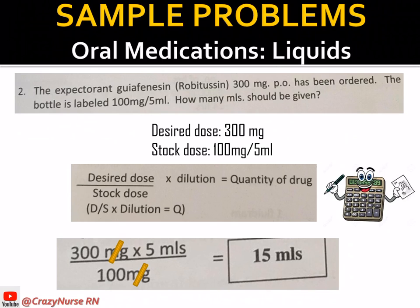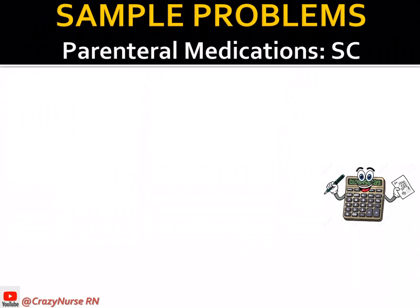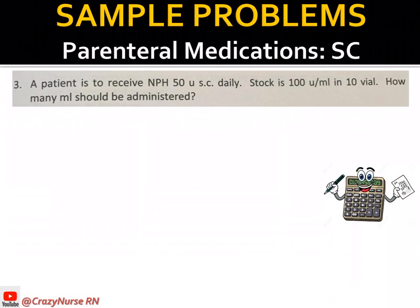For parenteral medication via subcutaneous route: a patient is to receive NPH insulin — one form of insulin — 50 units subcutaneously daily. The stock is 100 units per ml in a 10 ml vial. How many ml should be administered? The desired dose is 50 units and the stock is 100 units per ml.